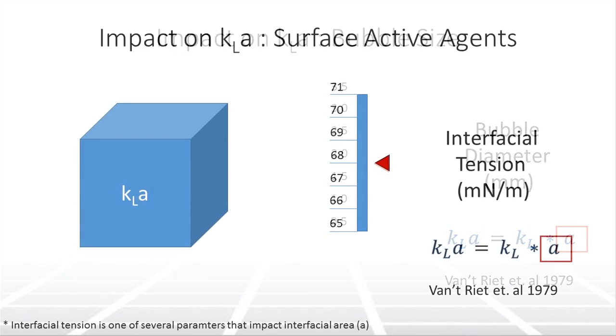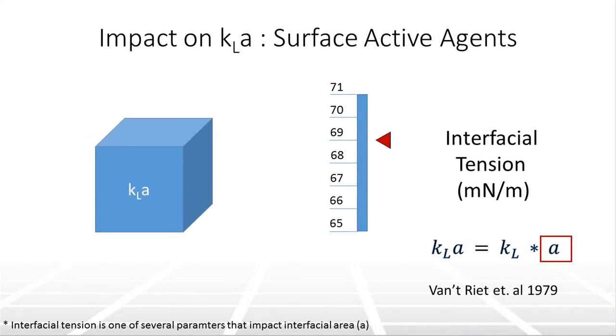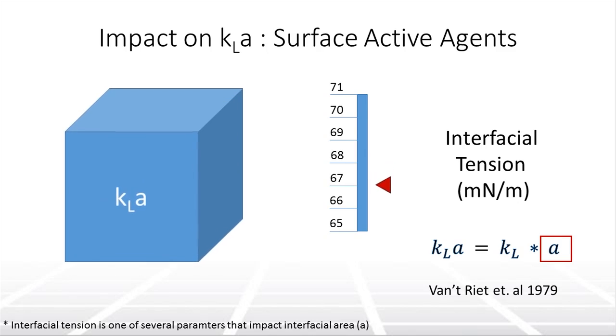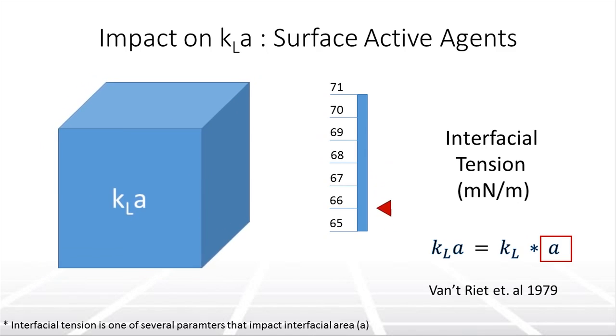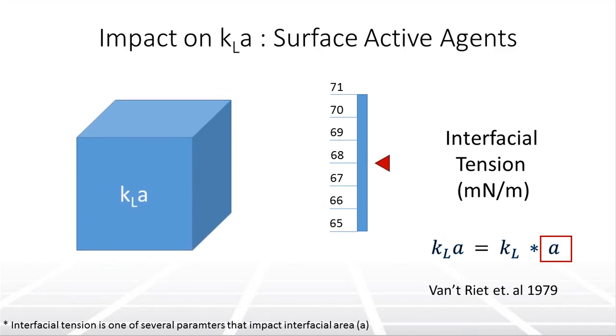Lastly, let's evaluate surface active agents. Salts and surface active agents will affect the interfacial tension of the bubbles. As interfacial tension decreases, bubble size decreases. This leads to an increased interfacial area, and therefore, increases the KLA.